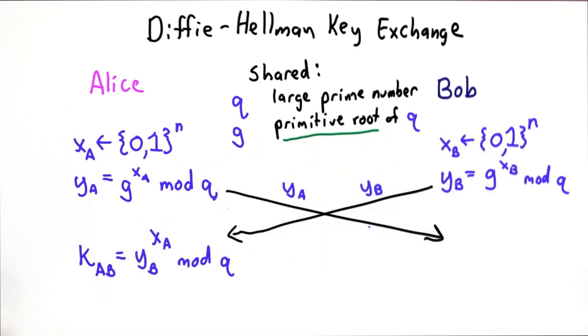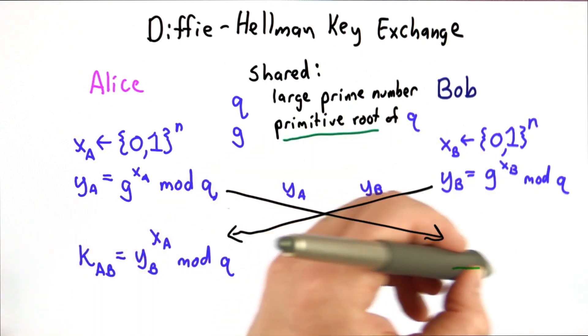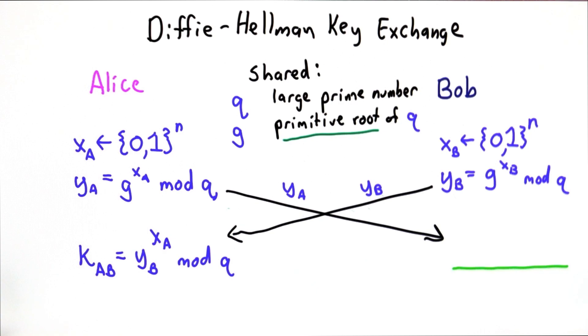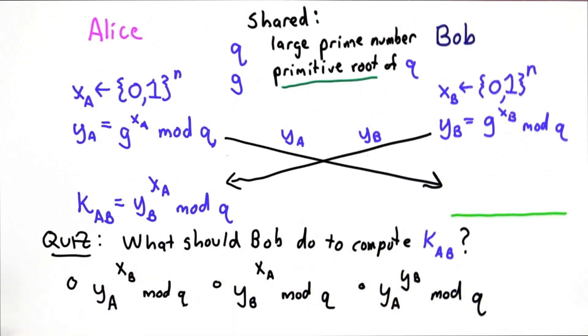If this is a good key distribution protocol, well then there should be a way for Bob to compute the same key. I'll see if you can figure that out yourself by making that a quiz. So these are the possible choices. Which one of these should Bob compute to obtain the same key as Alice did here?